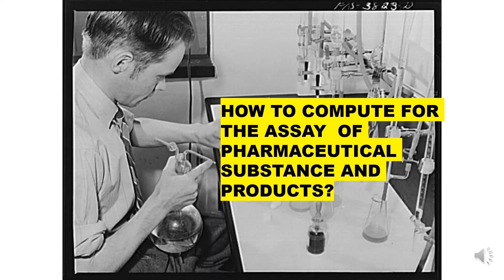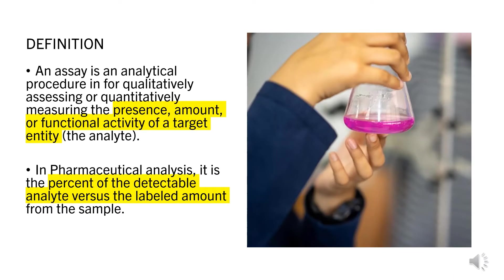Today we will discuss the formulas used to compute the assay of pharmaceutical products and substances. First, we will give a definition for the assay and the formulas for assay calculations. An assay is an analytical procedure for qualitatively assessing or quantitatively measuring the presence, amount, or functional activity of a target entity, the analyte. In pharmaceutical analysis, it is the percent of the detectable analyte versus the labeled amount from the sample.